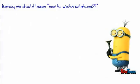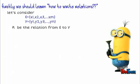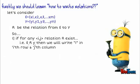Firstly, we should learn how to write relations. Let's consider x and y, where r be the relation from x to y. So, if for any ij, relation r exists, then we are going to write 1 in ith row and jth column.